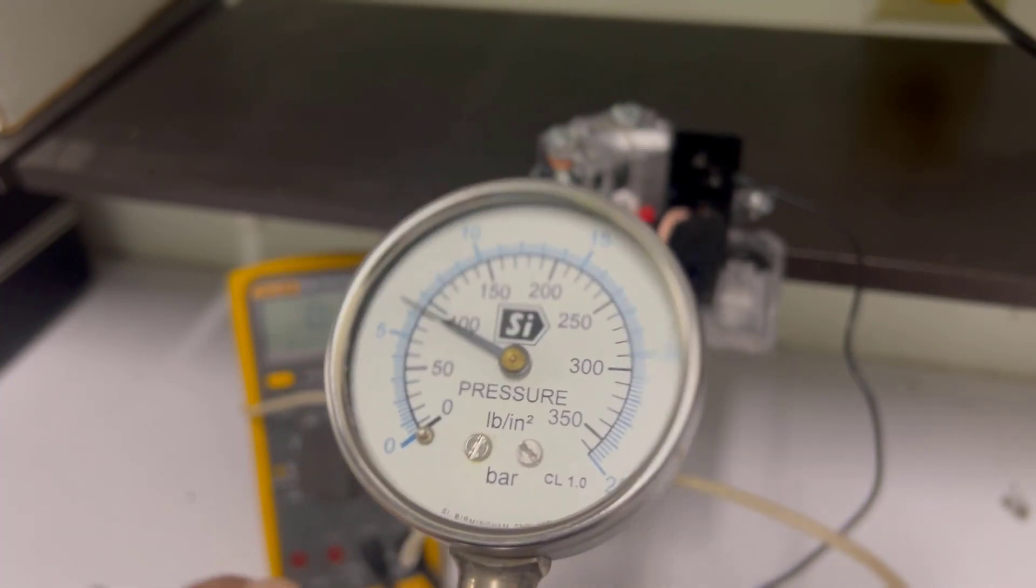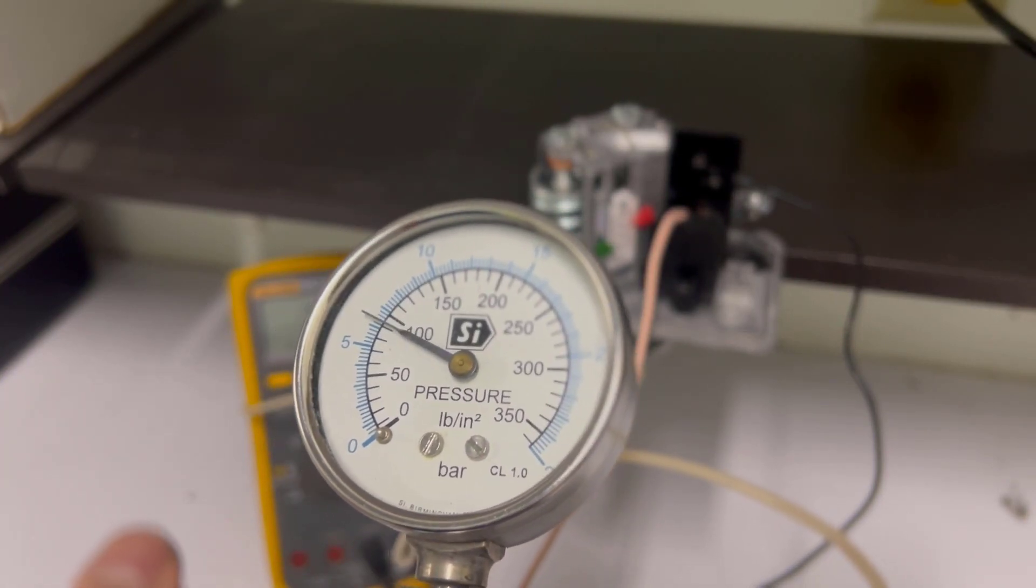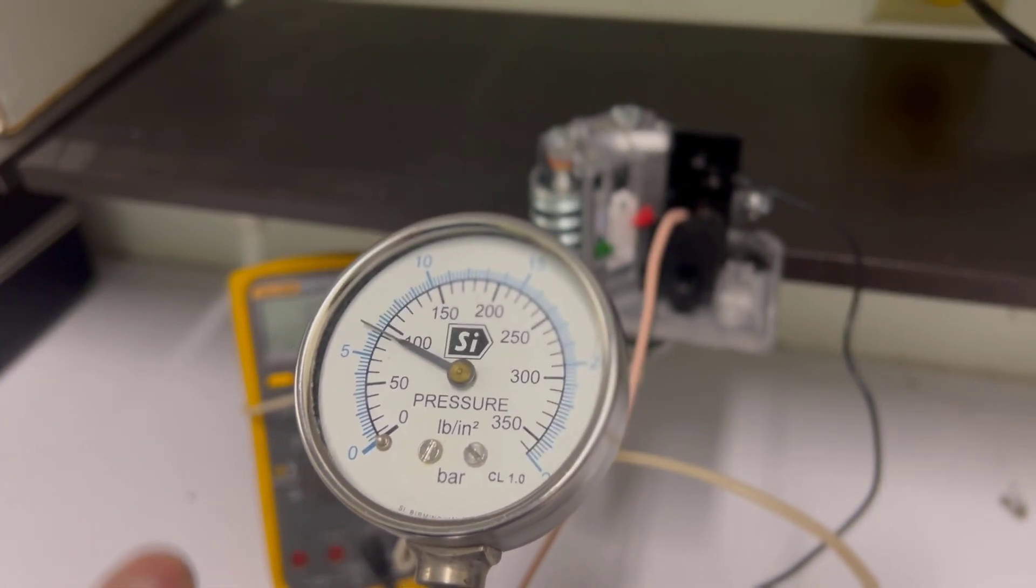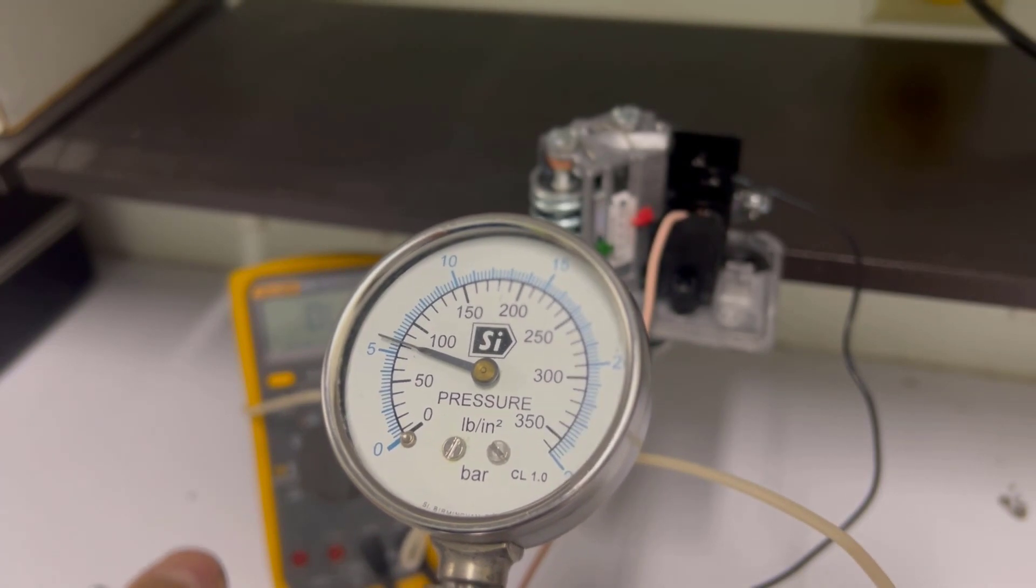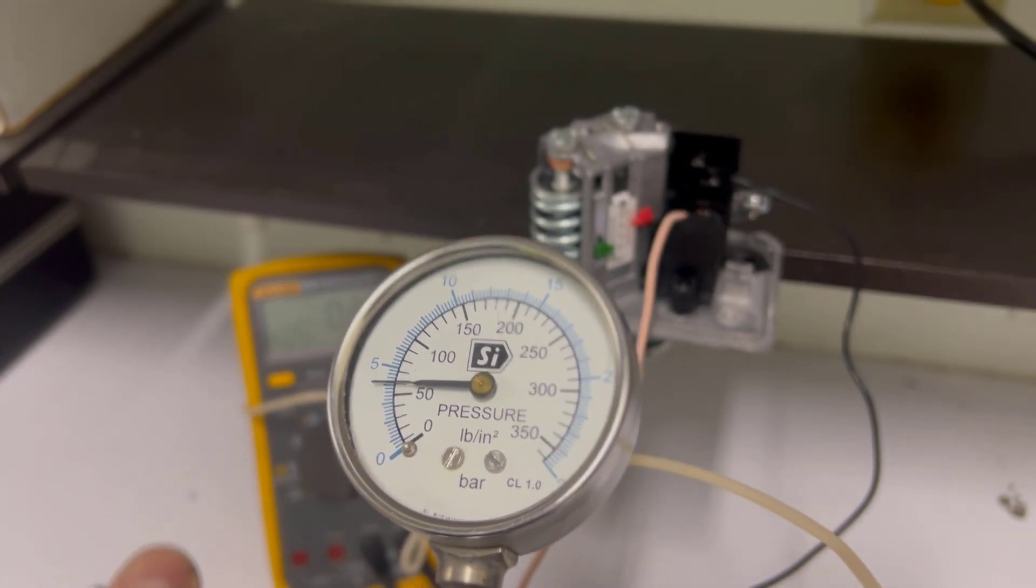As you can see, the pressure switch cut-out is typically set to 90 psi. Additionally, the pressure set point is reduced by about 60 psi when we decrease pressure.